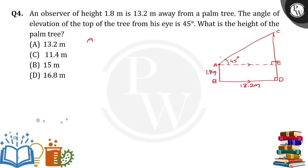So here we can say that ABDE forms a rectangle. Forms a rectangle such that AB is equal to DE is equal to 1.8 meter. So this one is also 1.8 meter. Not only that one, we will get BD is equal to AE is equal to 13.2 meter. So AE is also 13.2 meter.